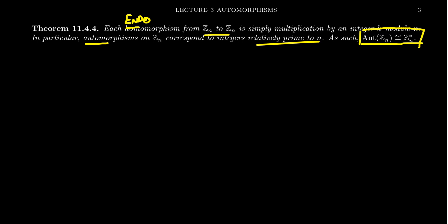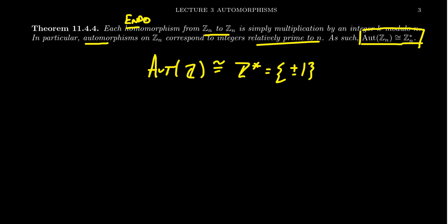This is even true for the infinite cyclic group. The automorphism group of Z, the infinite cyclic group, is isomorphic to Z*, which we typically define to be {±1} — those integers which have multiplicative inverses that are also integers. So theorem 11.44 completely characterizes the automorphism group of any cyclic group.